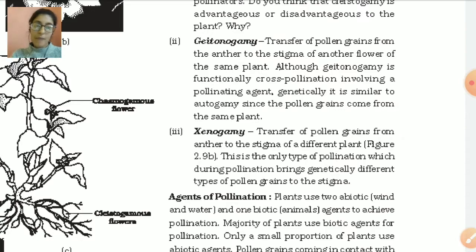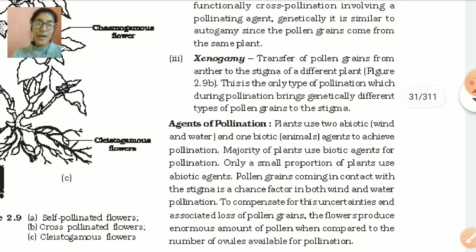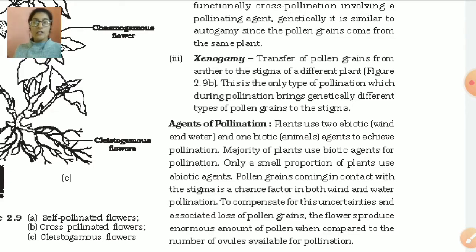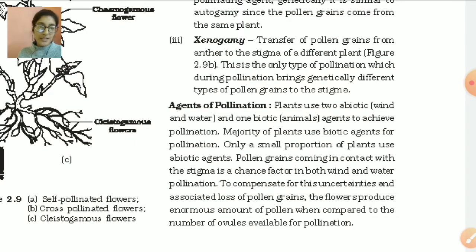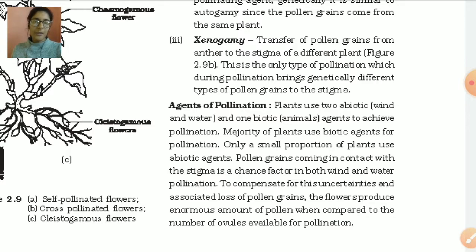Next — what are the agents of pollination? Plants use two types of agents: abiotic such as wind and water, and biotic such as animals and insects — all living creatures. Majority of plants use biotic agents for pollination, like honeybees around flowers. Only a small proportion of plants use abiotic agents. For wind and water pollination, pollen grains coming in contact with the stigma is a chance factor. If the wind goes in the direction where the stigma is present, pollination will occur; otherwise it will not. So revise your chapter till now. We will do the next part in the next video. Thank you very much.